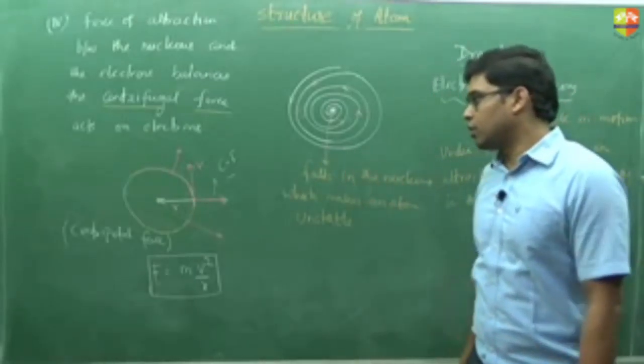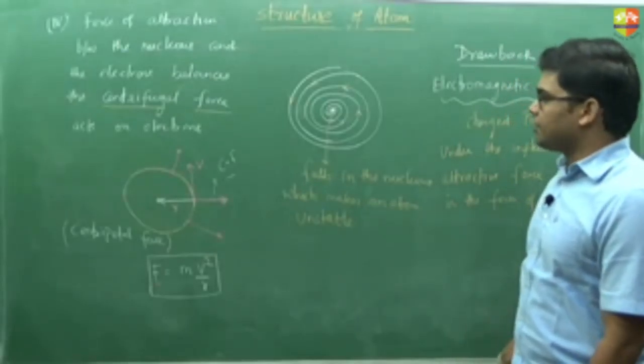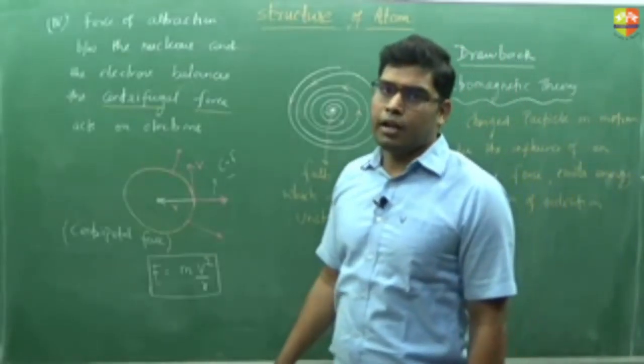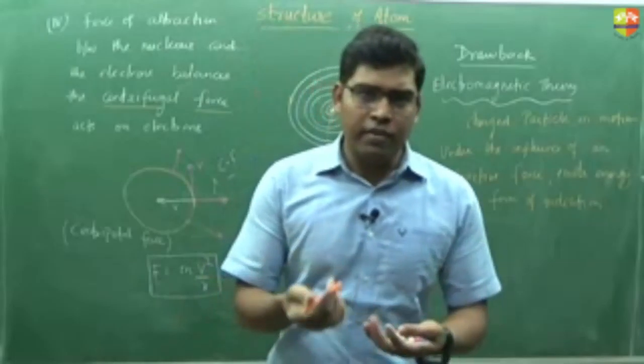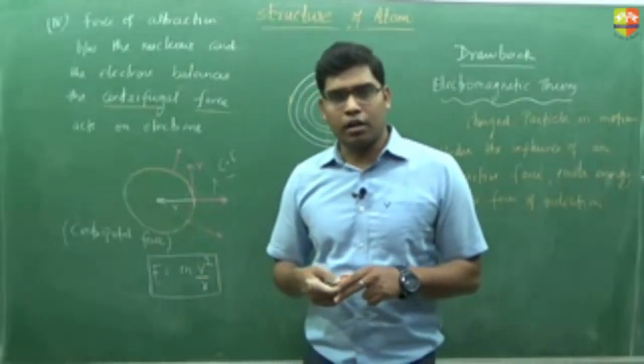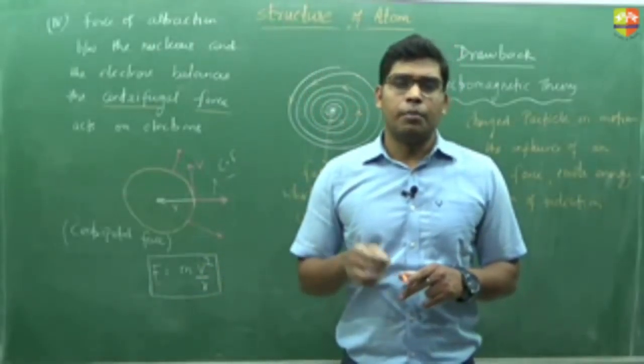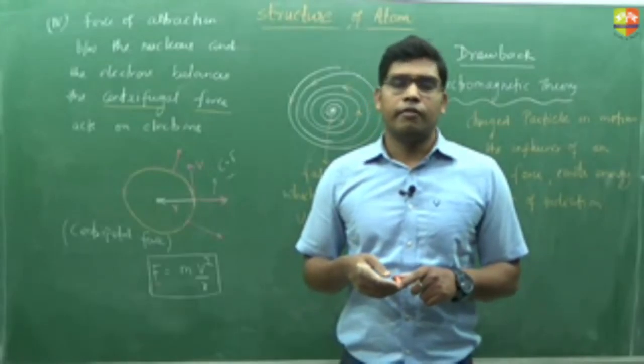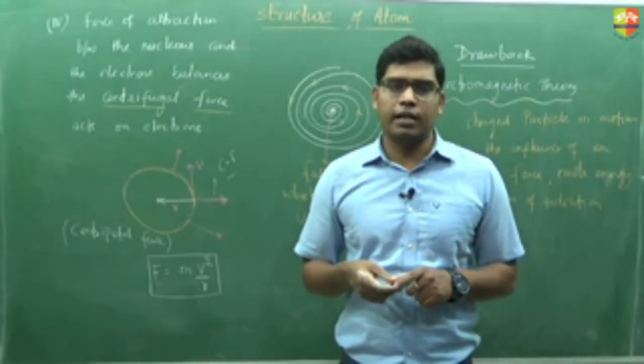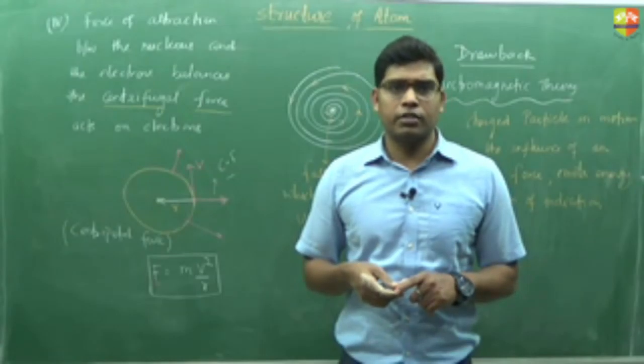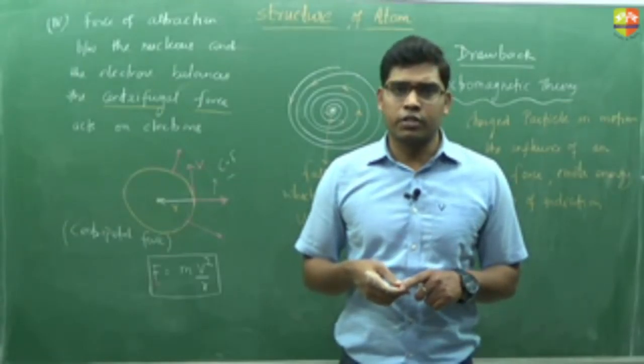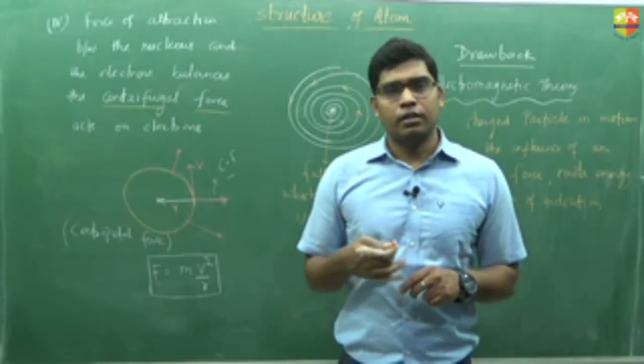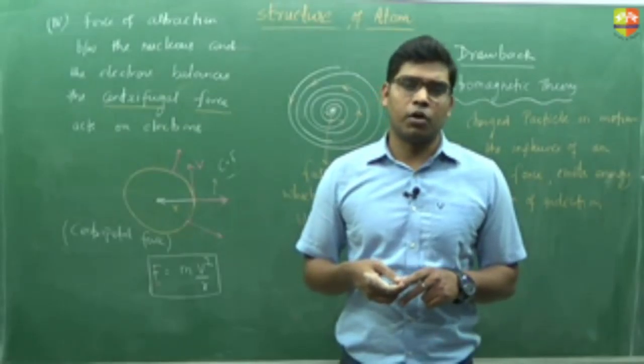And that's why we have discarded this particular model. And again we get a different model that we call Bohr atomic model. But to understand Bohr atomic model we have to understand the dual nature of matter or light, that is wave nature or particle nature. So next class we'll discuss first the dual nature of matter, then we'll go to the Bohr atomic model. Thank you.